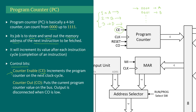The control bits for the program counter are CE (counter enable) and CO (counter out). Whenever CE is 1, at the next positive clock edge the program counter will increment its value. Whenever CO is activated to logic 1, the program counter will send its stored value to the bus so any other module can receive that data.